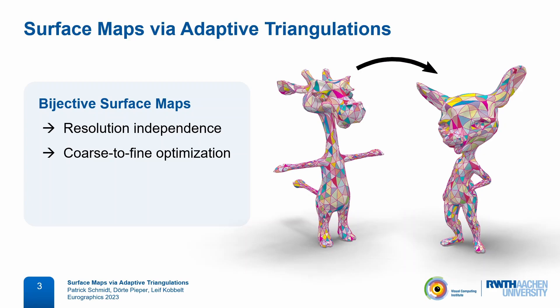We will be mapping via the sphere and this currently limits the method to genus zero surfaces. However, we are able to map between entire shape collections at the same time, which is something that not all previous methods are able to do.